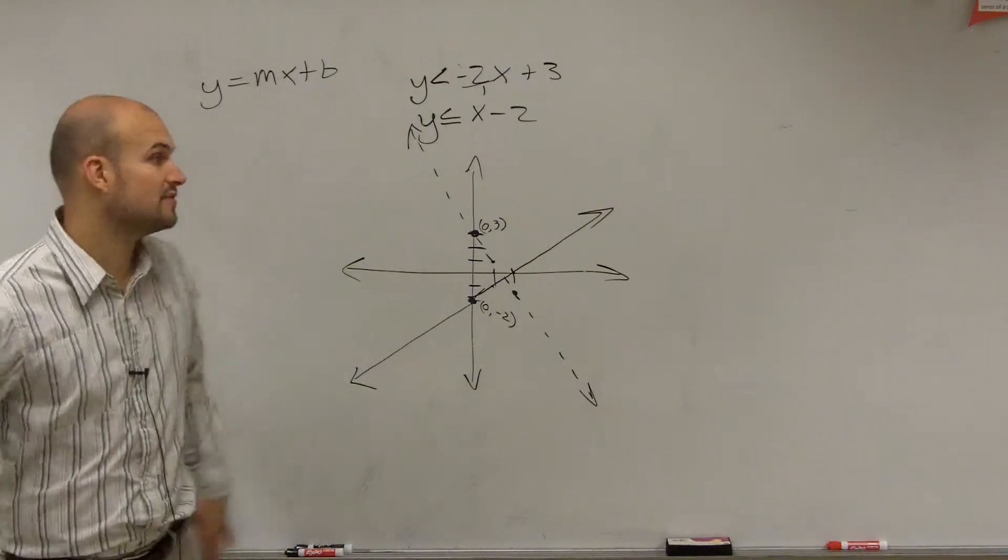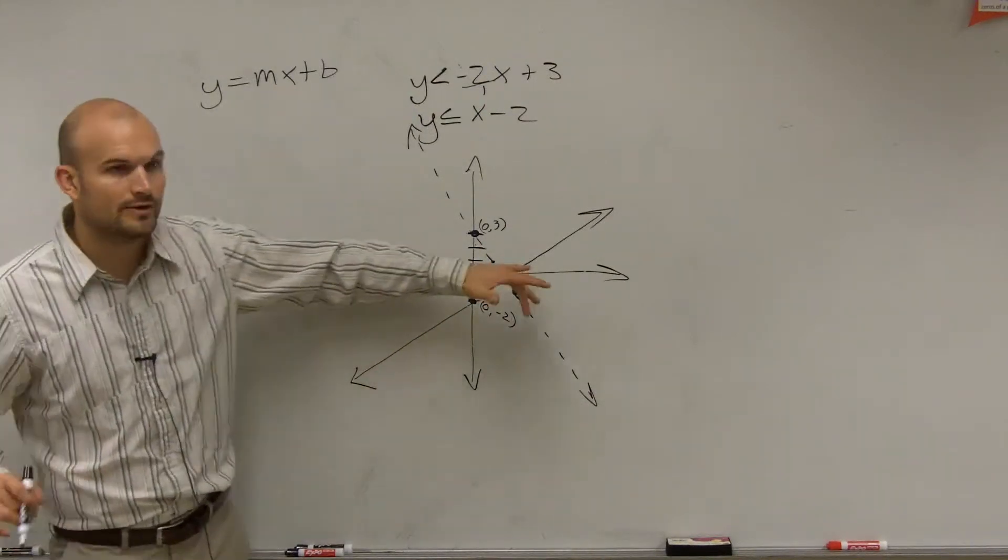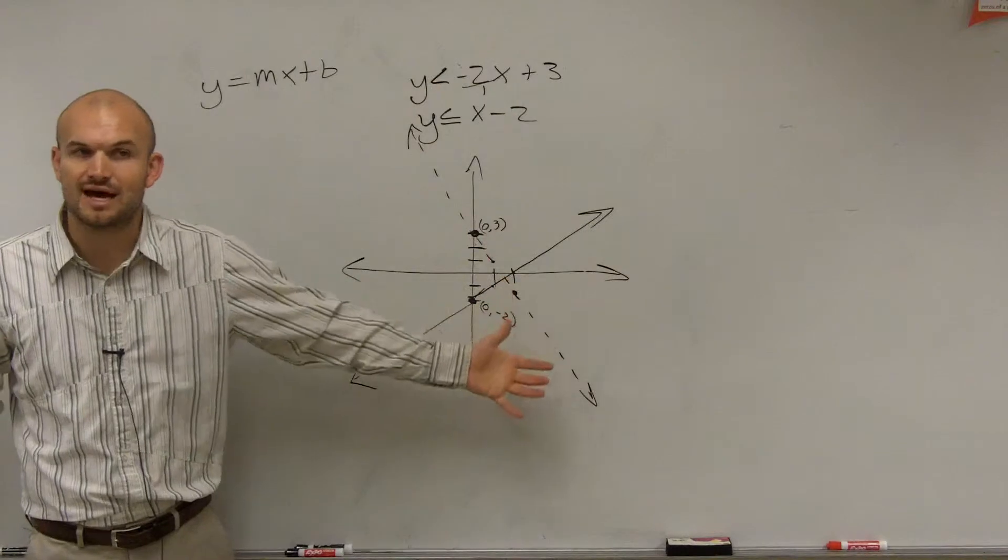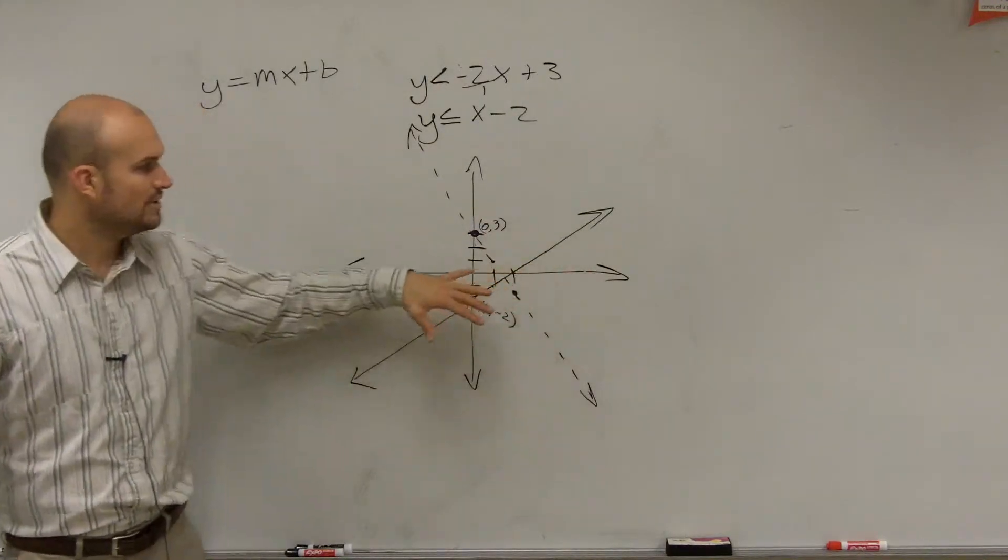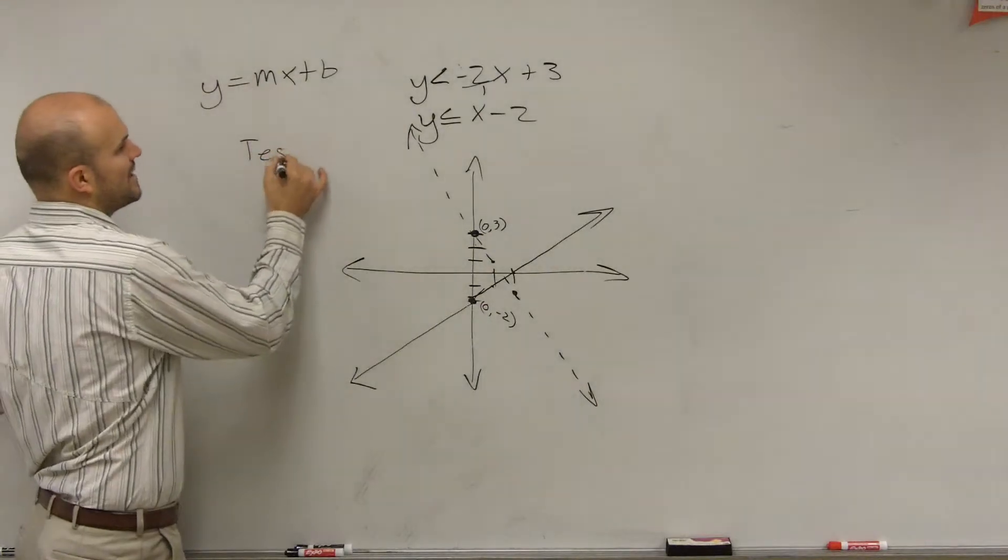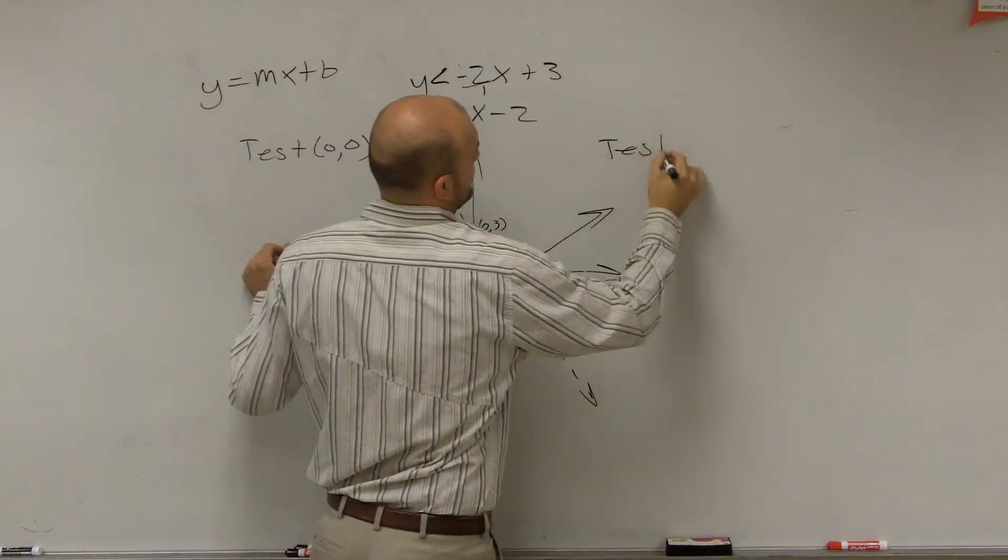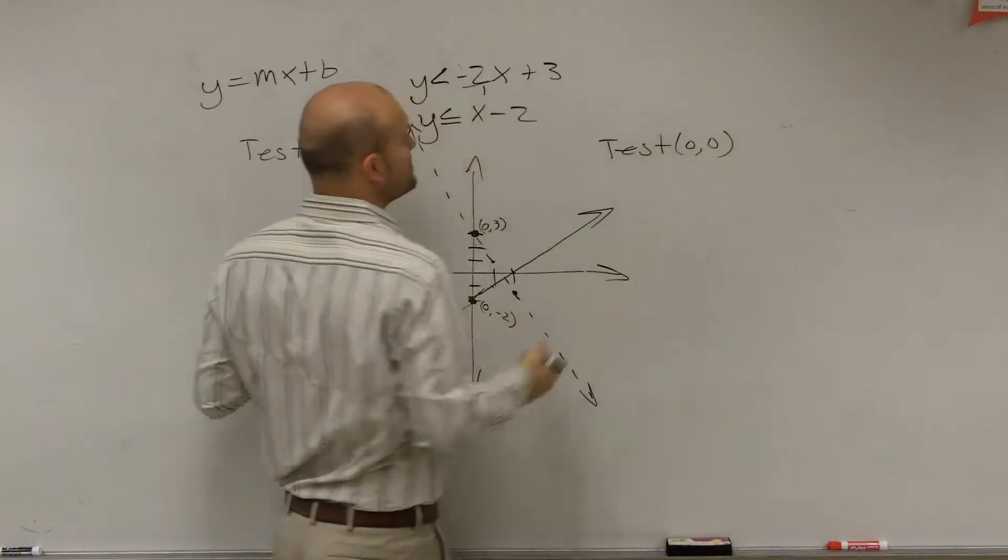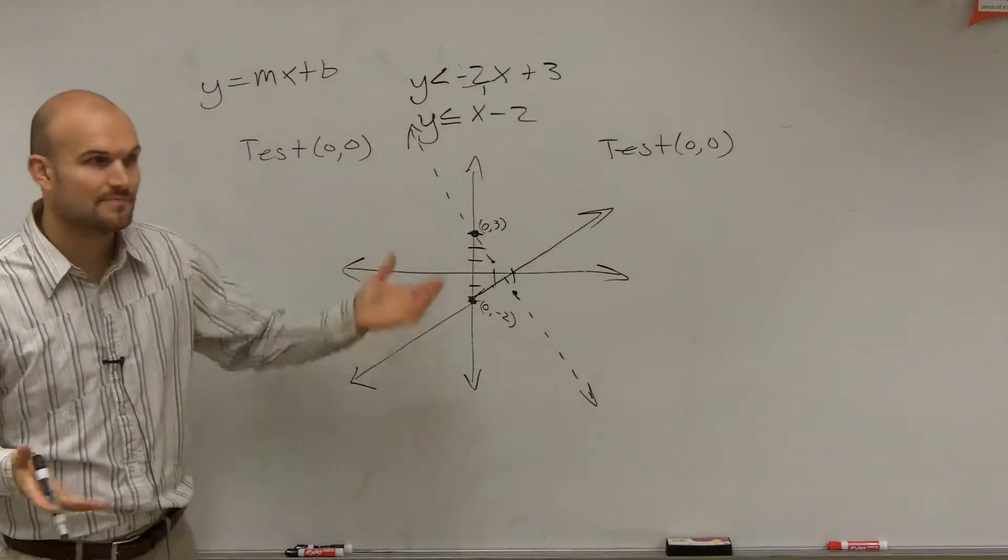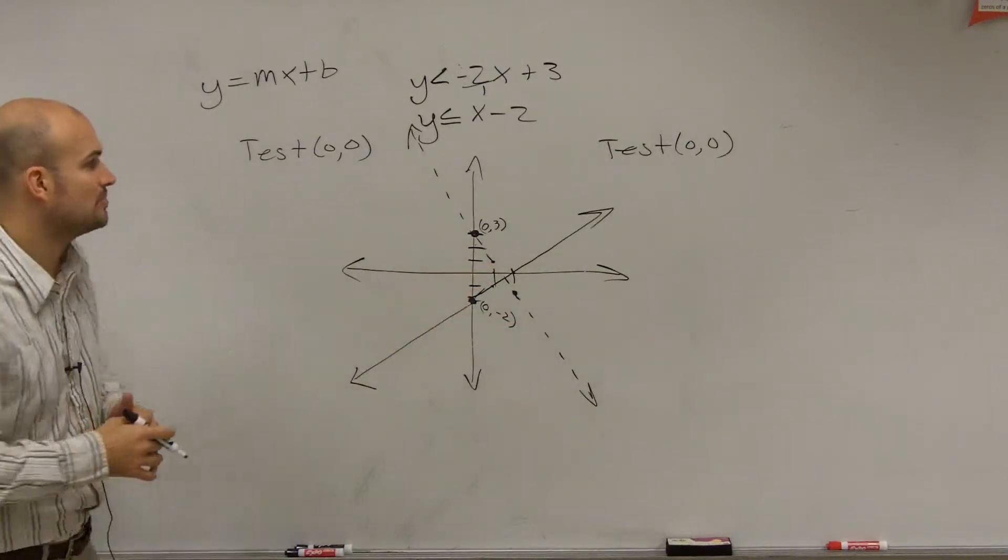Now, the last part, though, to get full credit for this, you had to go and find out where do you shade. Because right now, all we're doing is we're just testing the solutions of the line. But in inequalities, we need to test our points to see what else is going to make it true. So the best solution point ever created to choose is going to be 0, 0, unless your line goes through 0, 0. Then you have to choose another point.